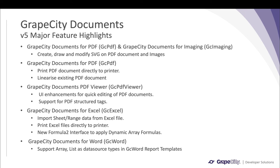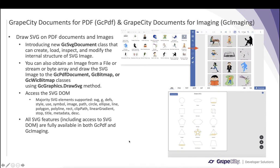In GC Excel, I will cover how to import sheet or range data from an Excel file. The key distinction is that you don't load the whole Excel file into the object model — you just import the data, making it a faster way of importing. You will also be able to print Excel files directly to a printer, and we have introduced a new Formula2 property to apply dynamic array formulas. In GC Word, we now support array and list as data source types, and individual elements of these data sources are accessible using a new value template tag.